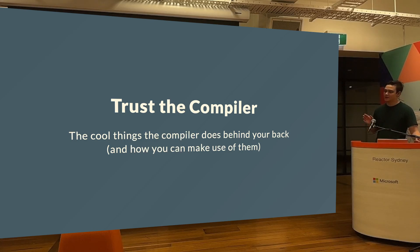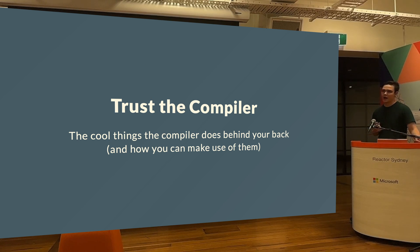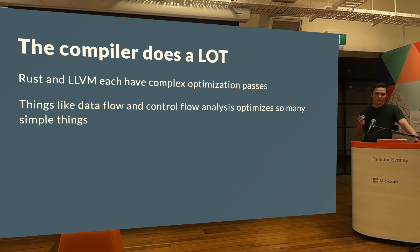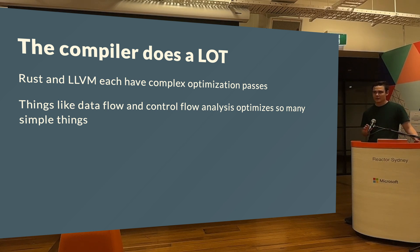My talk is about 'Trust the Compiler' — a short and sweet talk about knowing what the compiler can do behind your back to optimize your code for you, and how you can make use of that to write clean code while also being optimized. The compiler does a lot for you. Rust and LLVM implement a lot of optimization passes that optimize control flow, data, function calls, and a lot of things. I'll cover three small optimizations you can signal to the compiler.